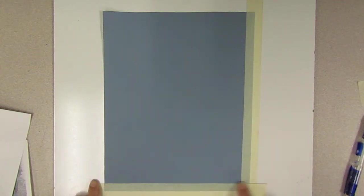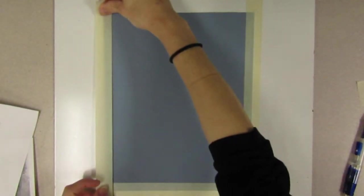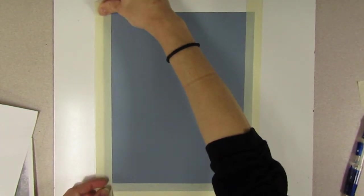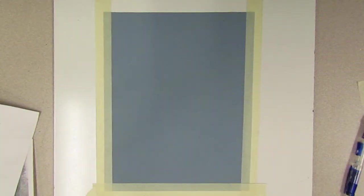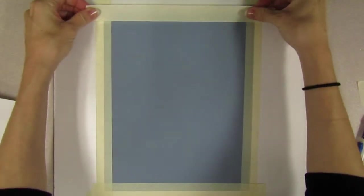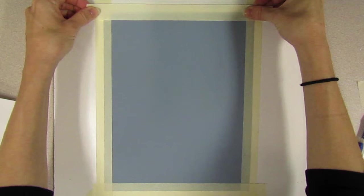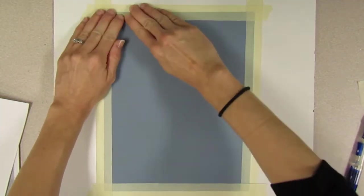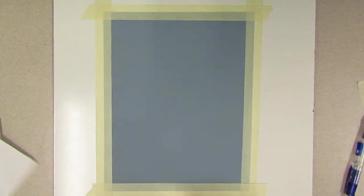And then you want to make sure that the tape is stuck down really well. So that way charcoal doesn't get underneath it. It's going to make a really nice border. So I'm lining it up again with each of my half inch pencil marks. And you do need more than one pencil mark because otherwise you're going to end up with a crooked line.